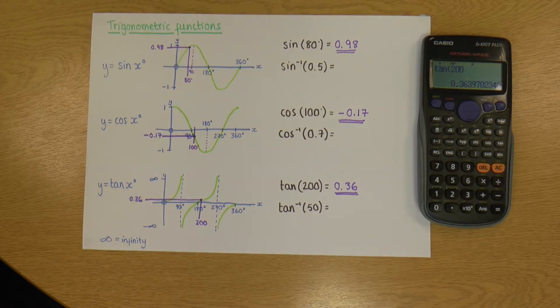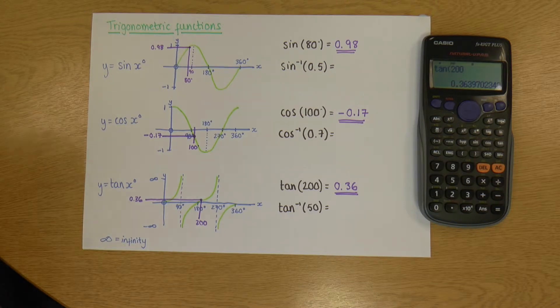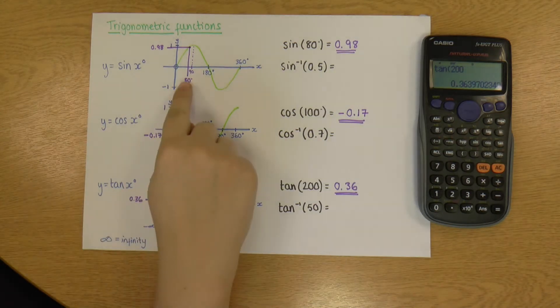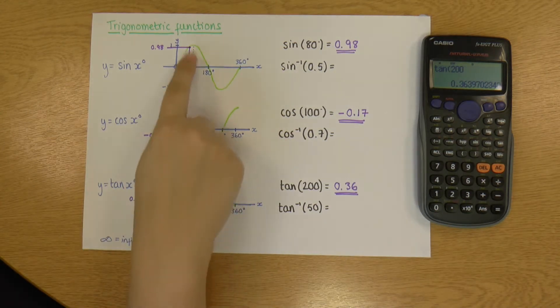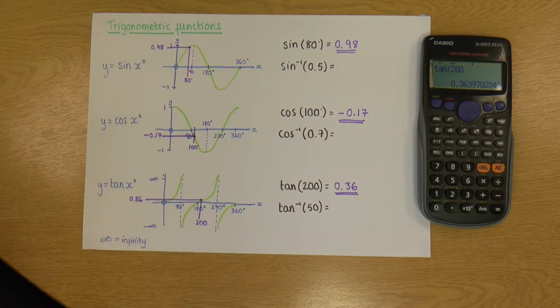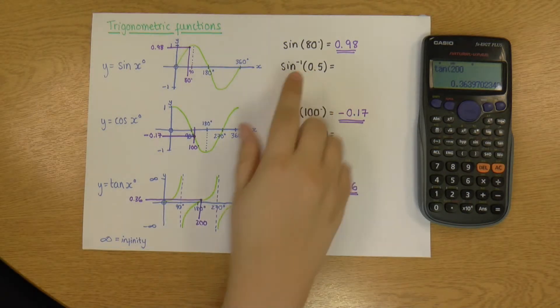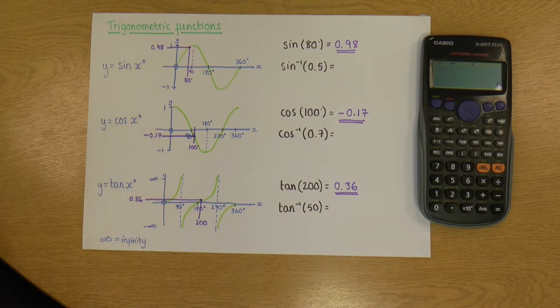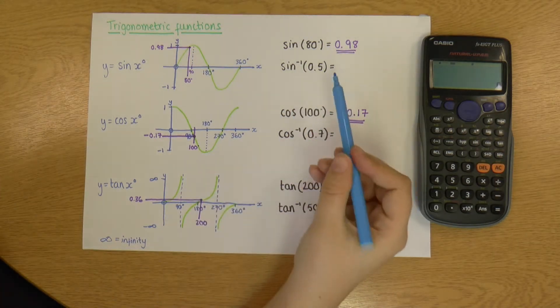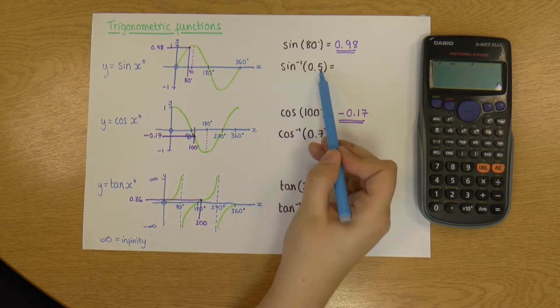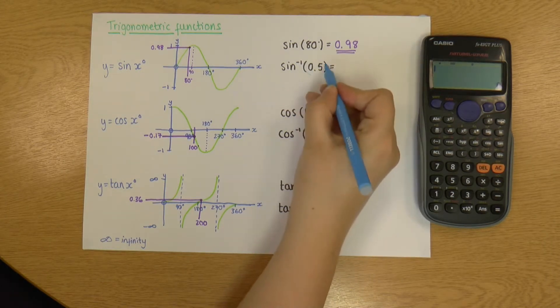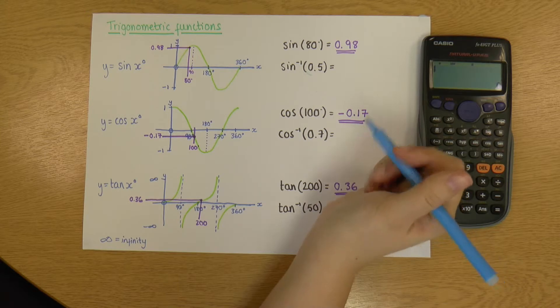So now let's have a look at these inverses. So for the ones we've just done, we found the degrees on the x-axis and then found what the y-value was. Now for the inverse, we literally do the inverse of that. We do the opposite. So let's go back to our sine. So this time, we've been given the y-value, and we need to find the x-value. We need to find the degrees.